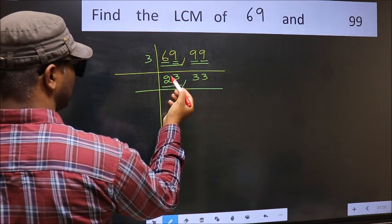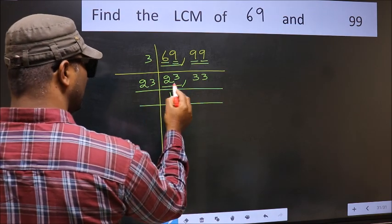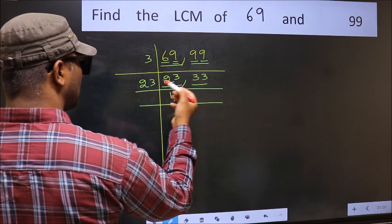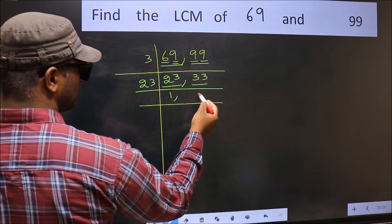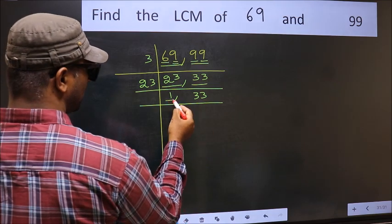Now here we have 23. 23 is a prime number. So 23 once 23. The other number 33, not divisible by 23. So you write it down as it is. Now we got 1 here.